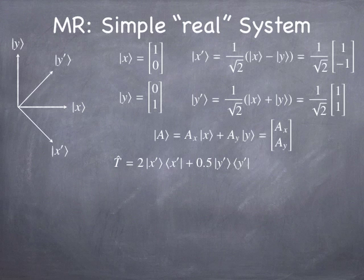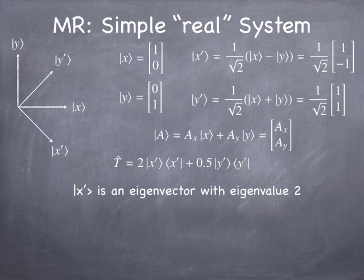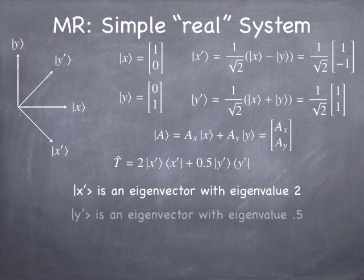Notice that if this operator operates on the x-prime basis vector, the second term gives nothing because the inner product of y-prime and x-prime is zero. So you just get two times the original x-prime basis vector. That means x-prime is an eigenvector of this operator with eigenvalue 2. Similarly, if you apply this operator to y-prime, it multiplies y-prime by one-half. So y-prime is an eigenvector with eigenvalue one-half. This operator has two eigenvectors, x-prime and y-prime, with eigenvalues 2 and one-half — manifestly obvious from the way the operator is constructed.